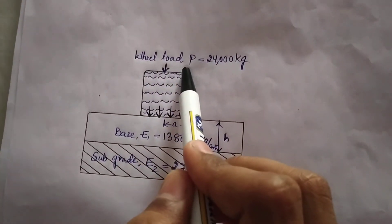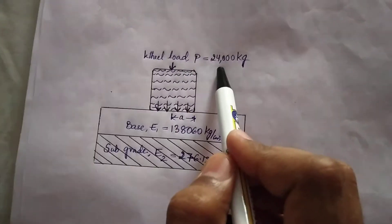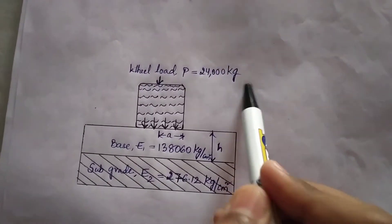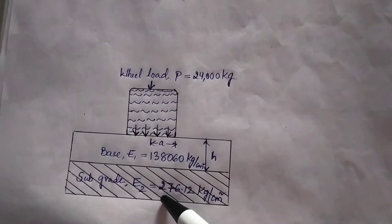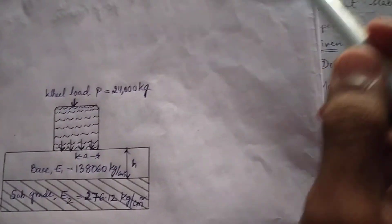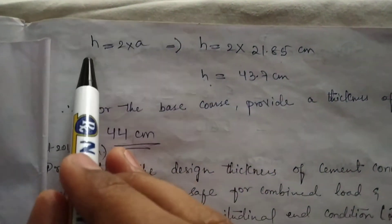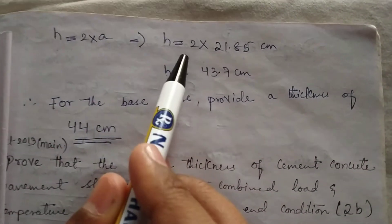We have the wheel load as given in the question as P equal to 24000 kg. Now we have to calculate the thickness h from this figure. So I am calculating from figure as h equal to 2 into a.